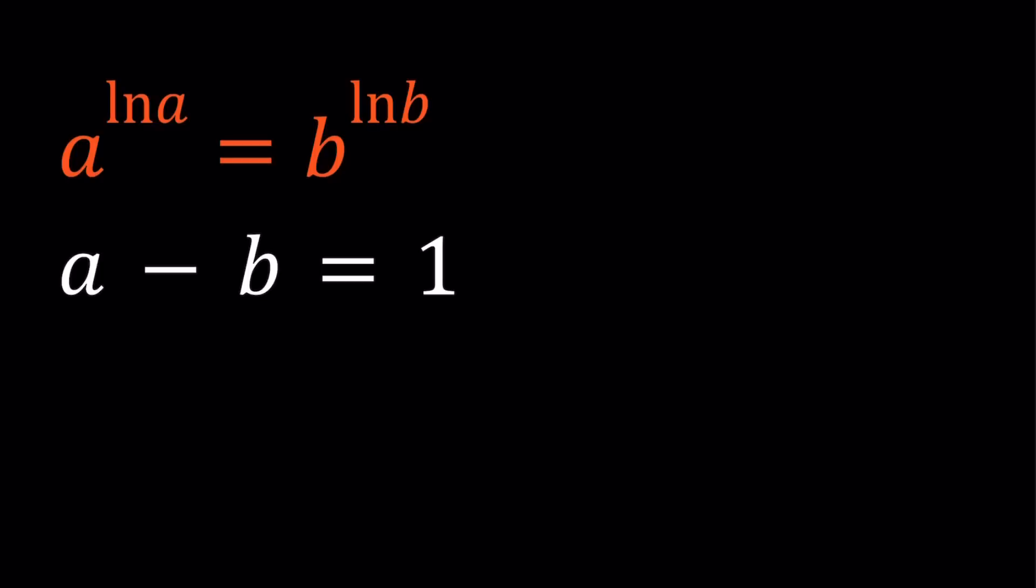We have a to the power ln a equals b to the power ln b, and a minus b equals 1. And we're going to be finding the a and b values.